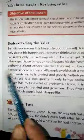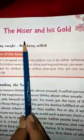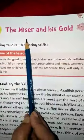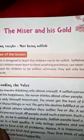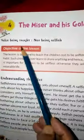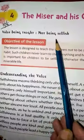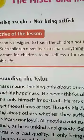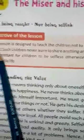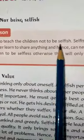Get ready with your book. Chapter 4 is 'The Miser and His Gold.' Miser means someone who doesn't want to spend his money. And what is the value taught in this chapter? Not being selfish. Selfish means when you only think about yourself and you don't care for anyone around you. The lesson is designed to teach children not to be selfish.